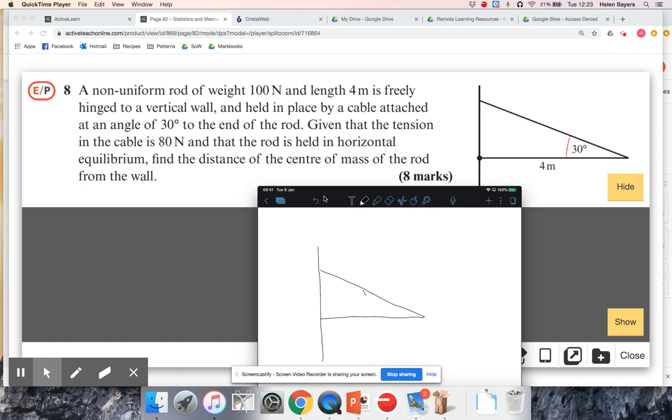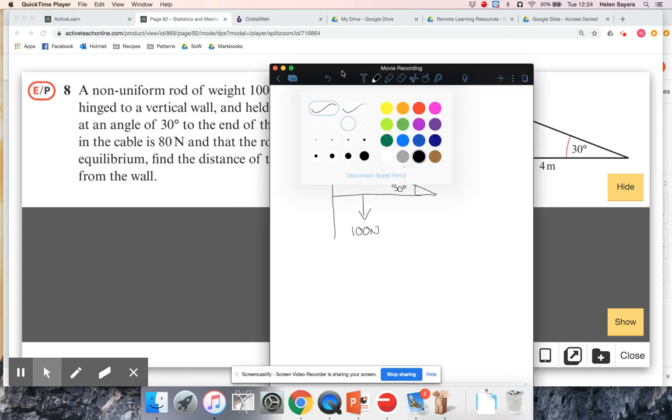So let's get that sketched out. There's my rod, there's the cable, and there's tension in the cable, that's 30 degrees. I don't know where the center of mass of the rod is, so it's 100 newtons. Given that the tension is 80 newtons, find the distance of the center of mass of the rod from the wall. So this is the distance I'm after. My diagram might not be particularly accurate. The center of mass might not be quite so close to the wall, but it's not going to affect the calculations I do.